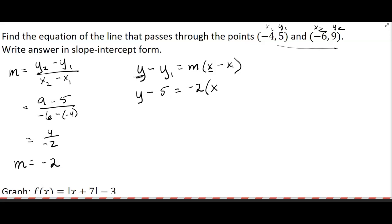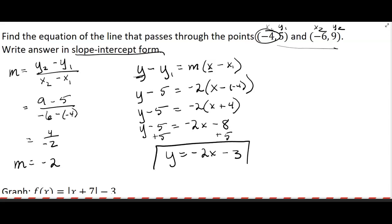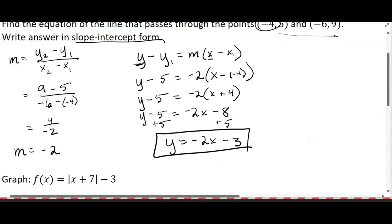We need to subtract x sub 1, which was negative 4. I usually take the time to write y minus 5 equals negative 2 times x plus 4, and then I want to put this in slope-intercept form. It tells me to. Then just adding 5 to both sides gets the y by itself, and so we have y equals negative 2x minus 3, and there you go on that one.